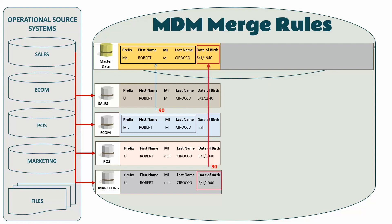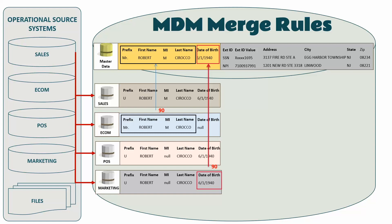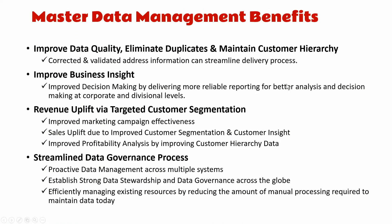Even though the name and date of birth are coming from two different sources, they become part of the master data. I also have the address from the four different source systems — since I applied an exact match on address, city, and state in the previous step, it yields a unique value. I concatenate the name, date of birth, and address to form one unique record. This is the single record that should appear when I look up Robert Siraco across the company — this is the master data management concept.